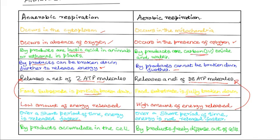Lastly, the byproducts — lactic acid and ethanol — accumulate in the cell during anaerobic respiration. But in aerobic respiration, the byproduct, mainly carbon dioxide, will diffuse out of the cell.